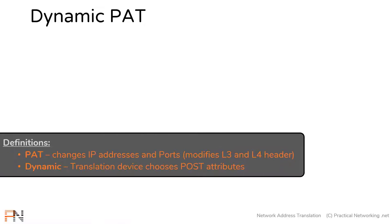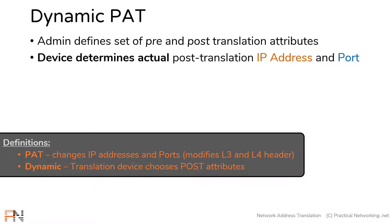Pulling up our definitions from the NAT terminology lesson: a dynamic translation is one where the translation device chooses the post-translation attributes, and a PAT is one where we're making a modification to the layer 3 and the layer 4 header. Combining those terms, a dynamic PAT is one where the administrator defines the pre-translation attributes and the post-translation attributes, but the device actually decides the mapping between the pre-translation IP address and port and the post-translation IP address and port.